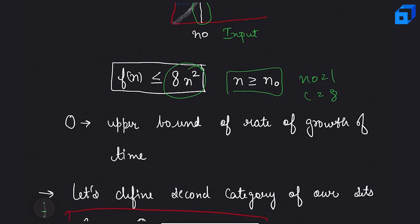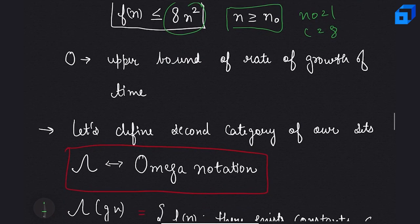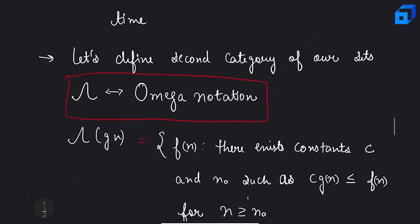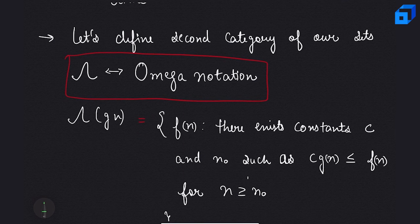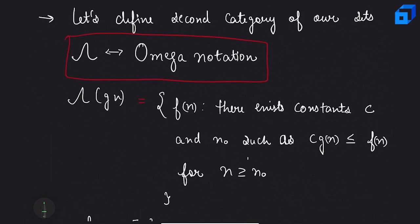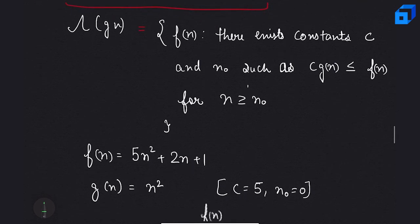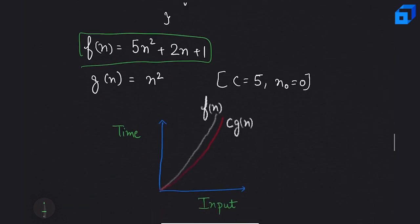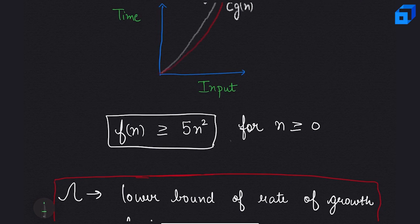Now let's define the second category: Omega notation. We say f(n) is Ω(g(n)) if there exist constants c and n₀ such that c·g(n) ≤ f(n) for all n ≥ n₀. For the same function f(n) = 5n² + 2n + 1 with g(n) = n², if c = 5 and n₀ = 0, then f(n) ≥ 5n² for all n ≥ 0.